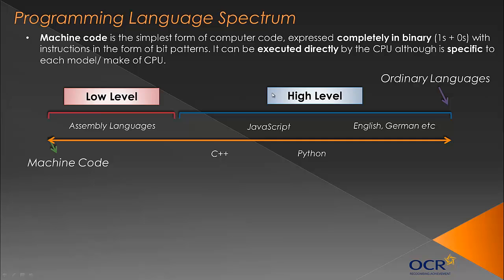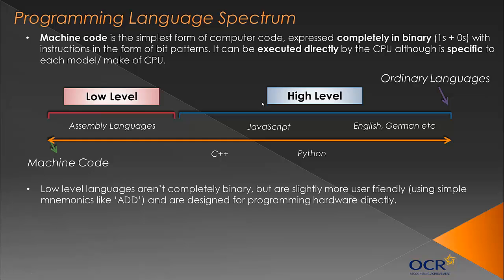High and low level are not to do with ability — that's the connotation — but more to do with how close they are to English versus binary. Machine code is completely binary. We then have assembly languages, which fall under the category of low-level programming languages. They're not completely binary but are slightly more user-friendly.